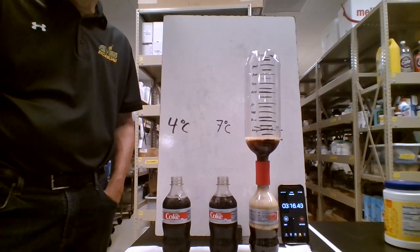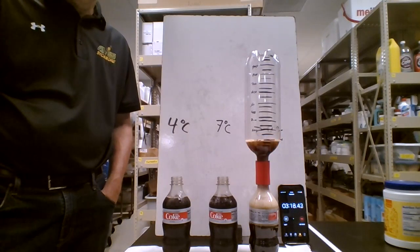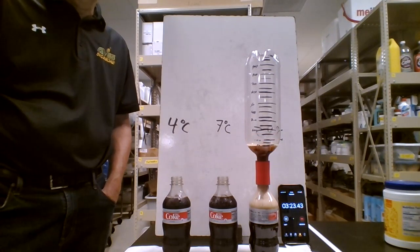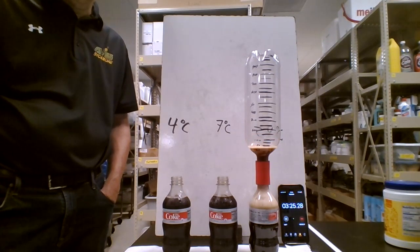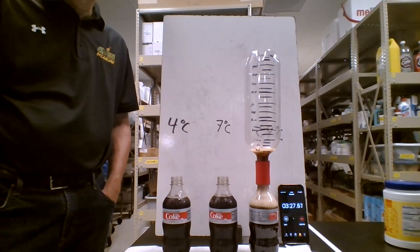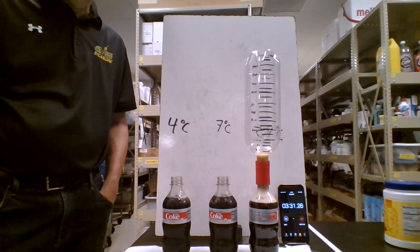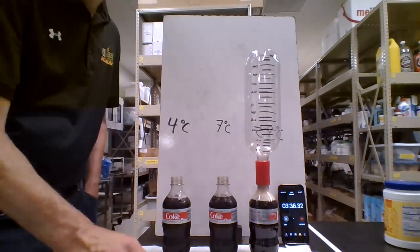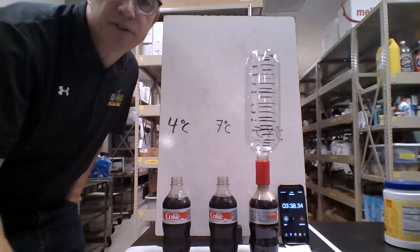So, there you have the Mentos Diet Coke experiment. Thank you very much. Think about what you could graph. What is the independent, the dependent variable? Could you graph one of these? Would you graph all three of these? What's the relationship, if any? And what variables would be worth looking at? And I'm sure there's a lot more questions.